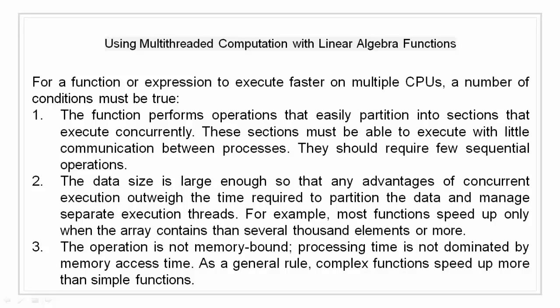So if section 1 is executing and section 2 is executing, they should execute in a way that they do not have to communicate with each other. The ideal communication should be none. Also, there should be very few sequential operations so as to reduce the wait time. The second condition is that the data size for the operation should be large enough so that any advantage of concurrent execution does outweigh the time required to create the partition for data and the time required to manage the execution of threads. For example, it makes no sense to perform parallel multiplication of a small-sized array as data partitioning itself takes more time than to calculate it.